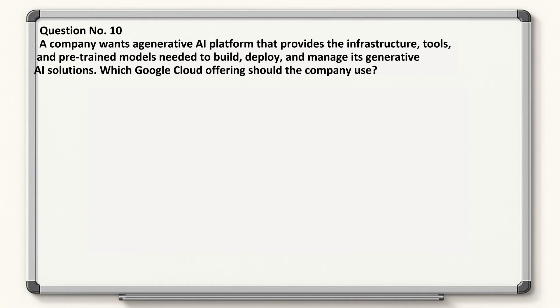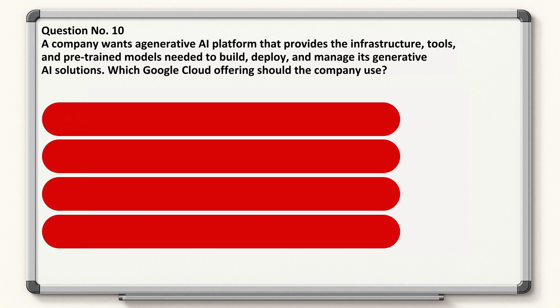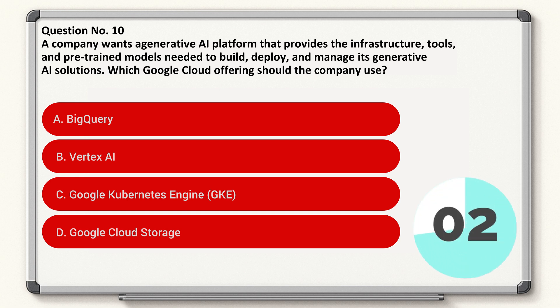Question number ten: a company wants a Generative AI platform that provides the infrastructure, tools, and pre-trained models needed to build, deploy, and manage its Generative AI solutions. Which Google Cloud models offering should the company use? Correct answer is B.